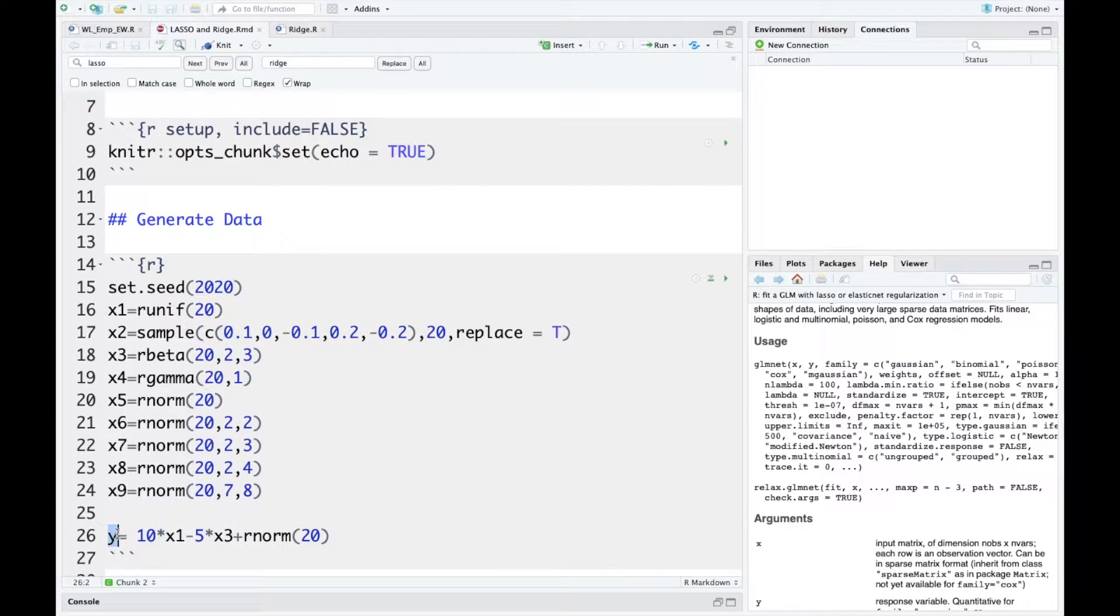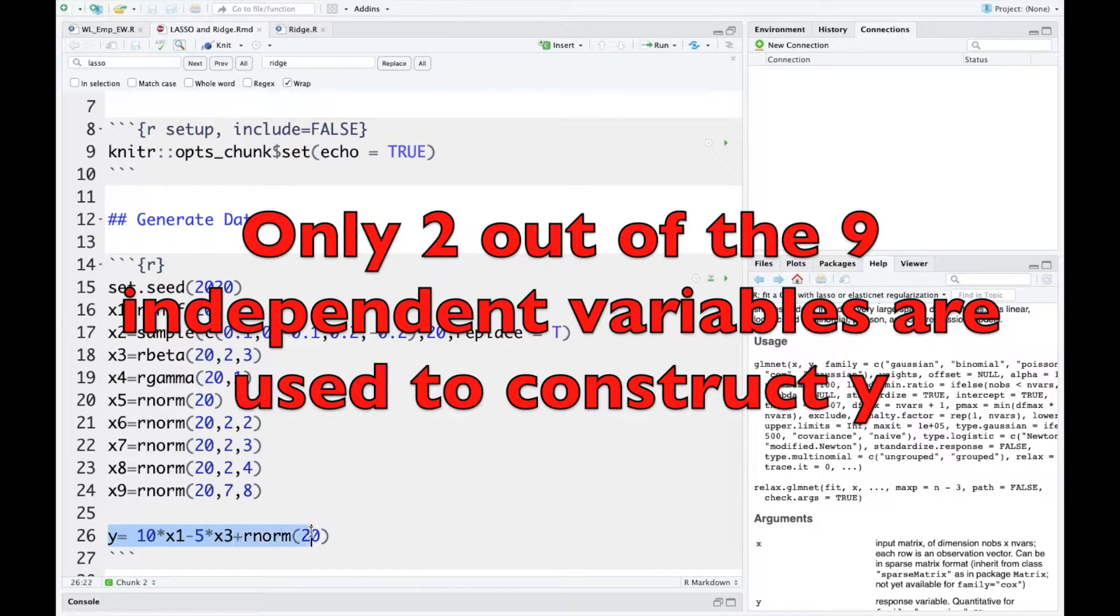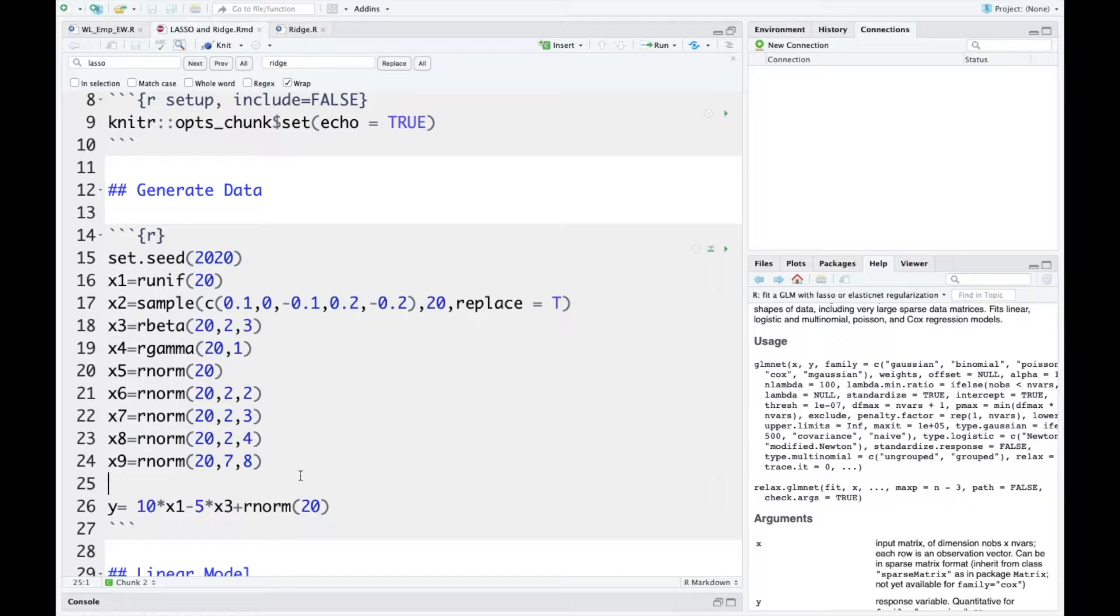As for the y or the response variable, it's a linear combination of x1 and x3, plus a standard normal error term. So as you can imagine, when we run a regression of y against nine different variables, overfitting is bound to happen.